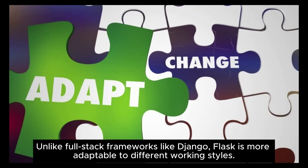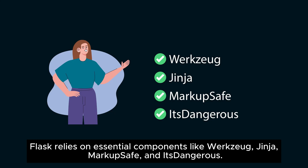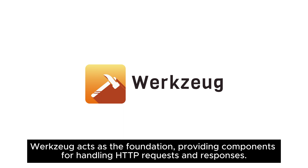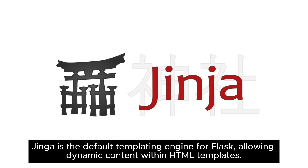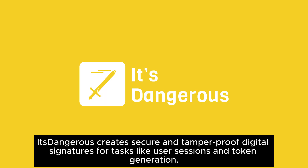Unlike full-stack frameworks like Django, Flask is more adaptable to different working styles. Flask relies on essential components like Werkzeug, Jinja, MarkupSafe, and ItsDangerous. Werkzeug acts as the foundation, providing components for handling HTTP requests and responses. Jinja is the default templating engine for Flask, allowing dynamic content within HTML templates. MarkupSafe marks strings as safe for HTML escaping, preventing cross-site scripting attacks. ItsDangerous creates secure and tamper-proof digital signatures for tasks like user sessions and token generation.